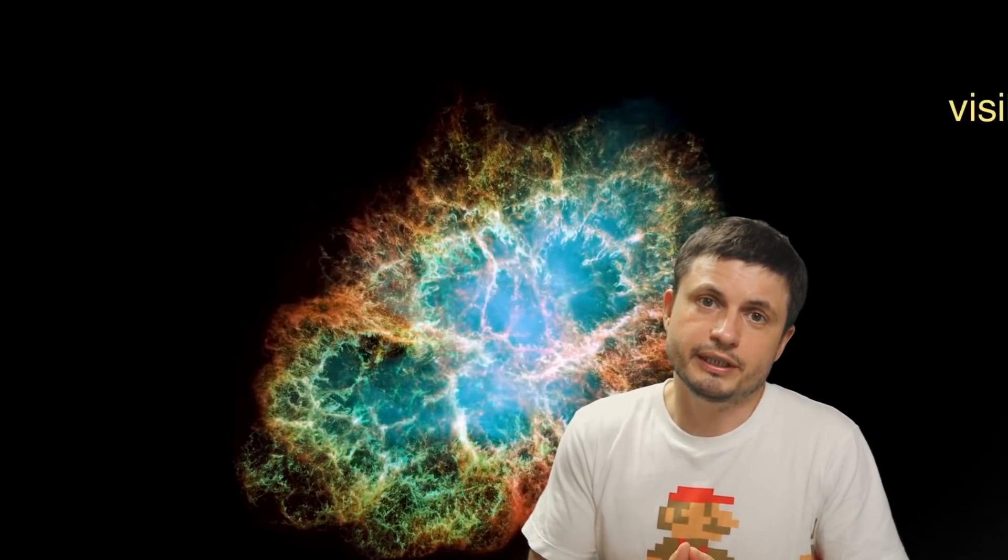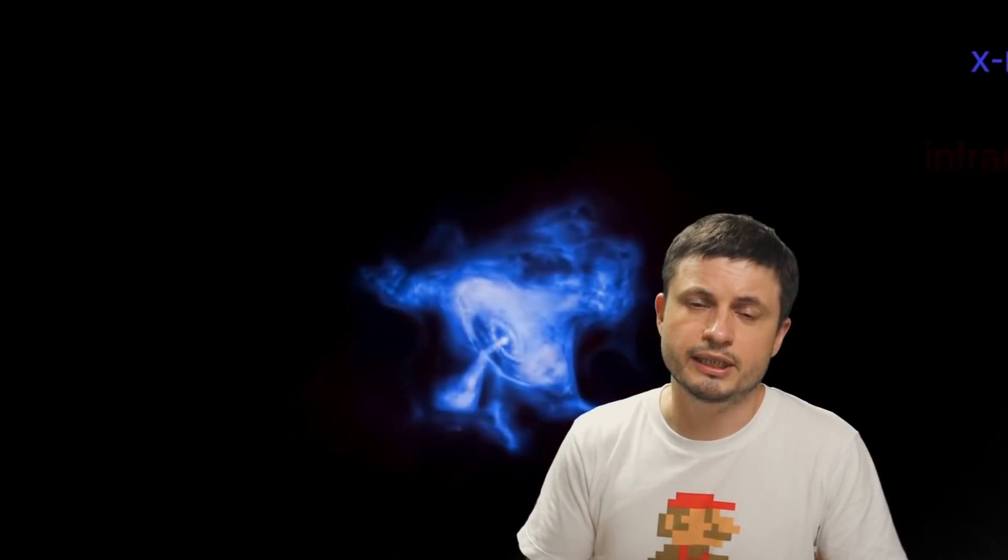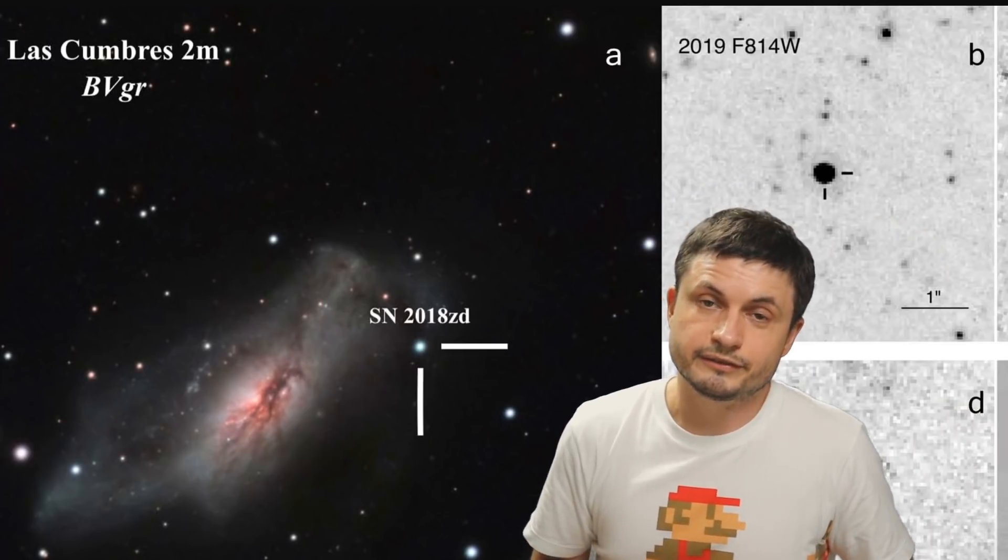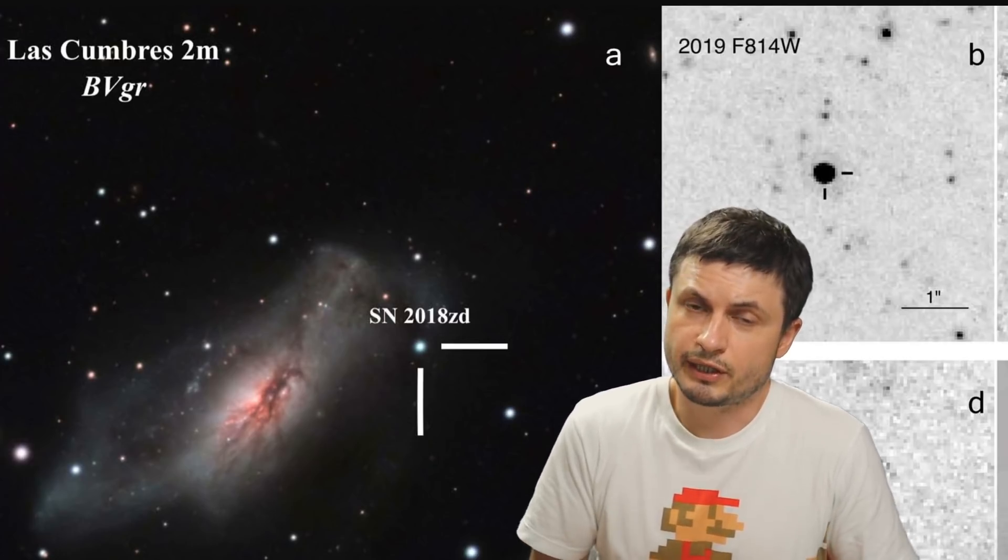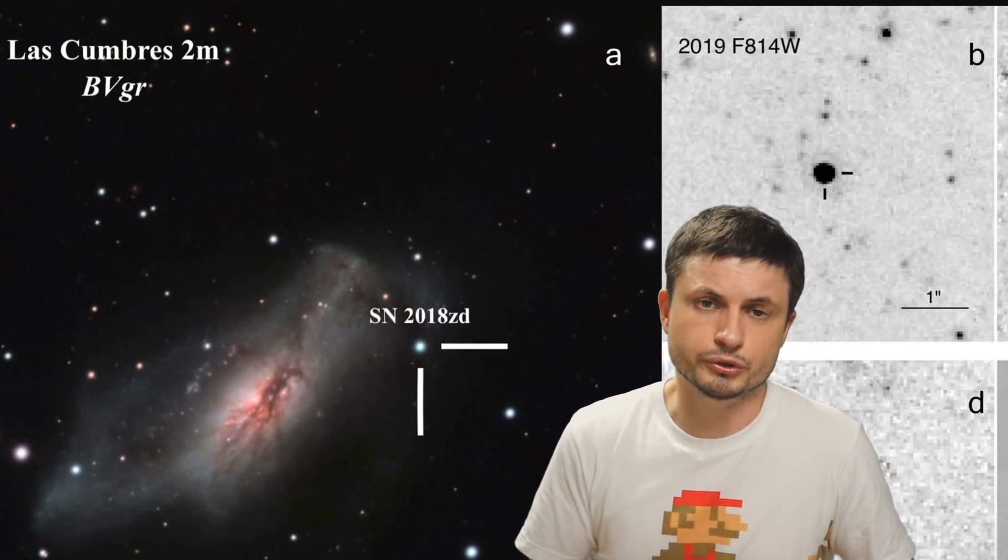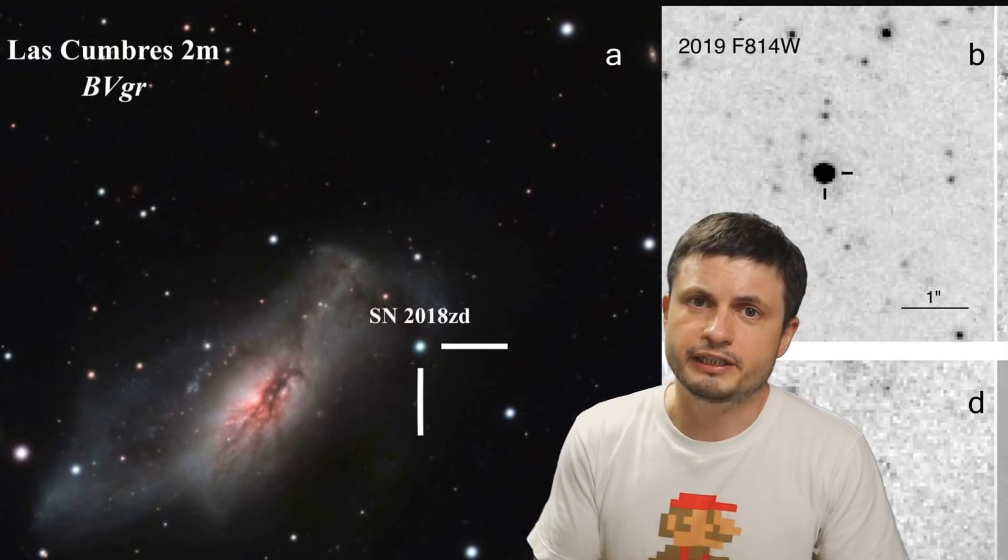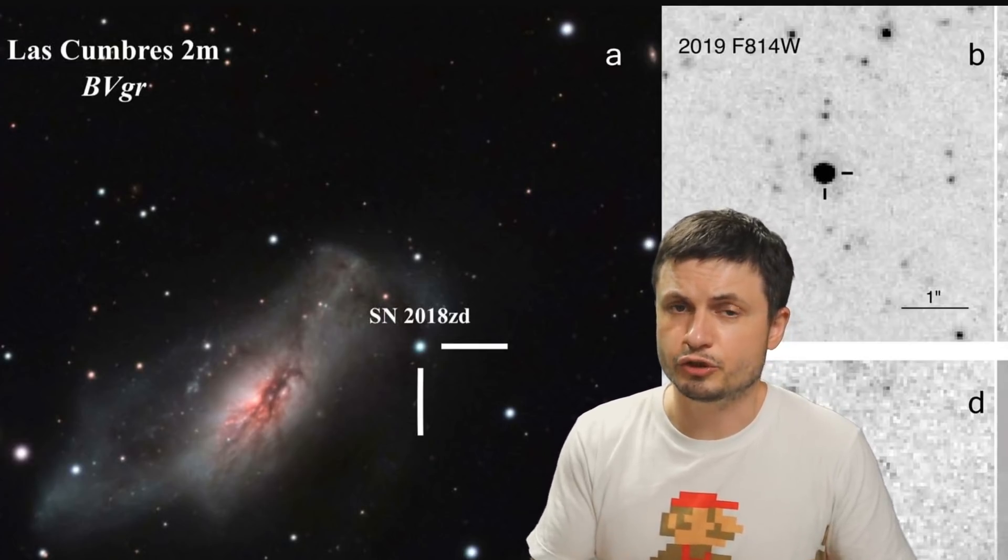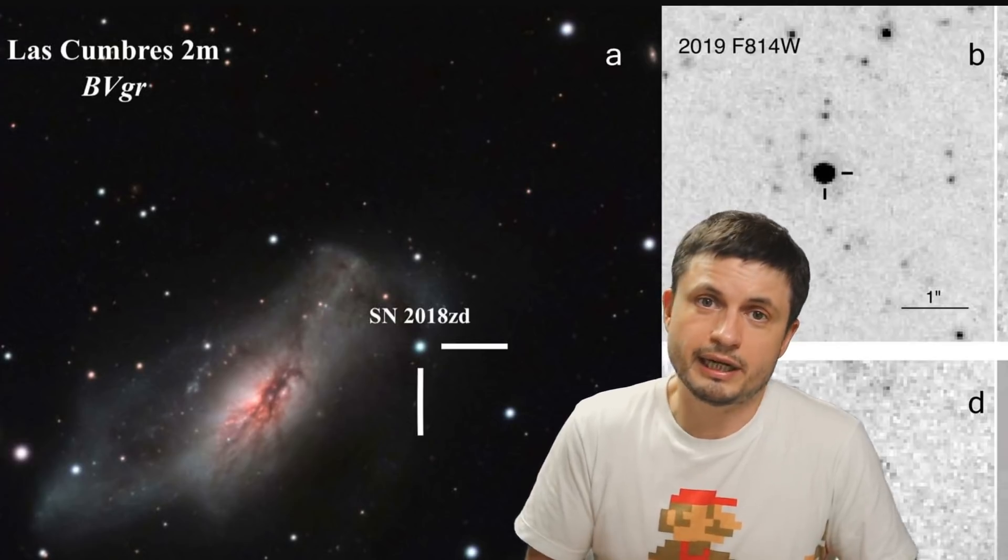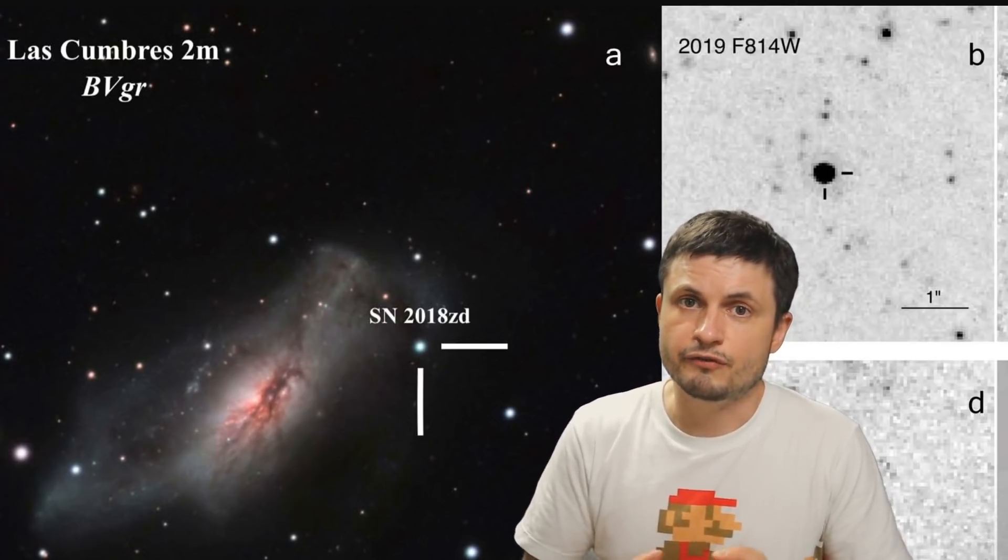But for now, all we know is that they do seem to exist, and chances are we're going to be finding more of them in the next few decades as well, simply because now we kind of know what to look for. This is definitely a really exciting discovery and a really exciting confirmation of a theory that's pretty much like 40 years old now. I'm sure a lot of new studies will be coming out in the next few years, possibly even identifying some other supernova that we might have missed that might also fit the same pattern.